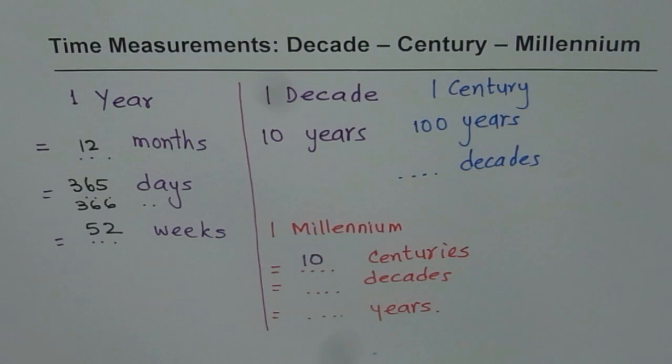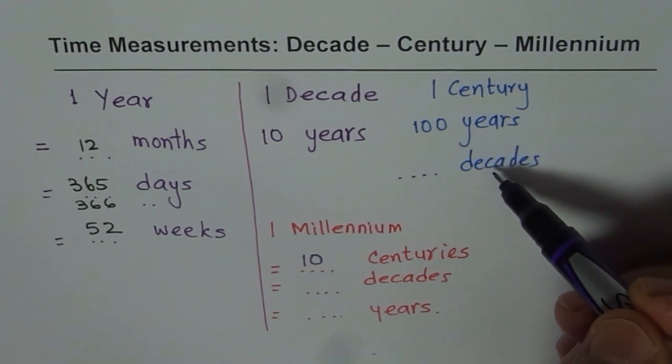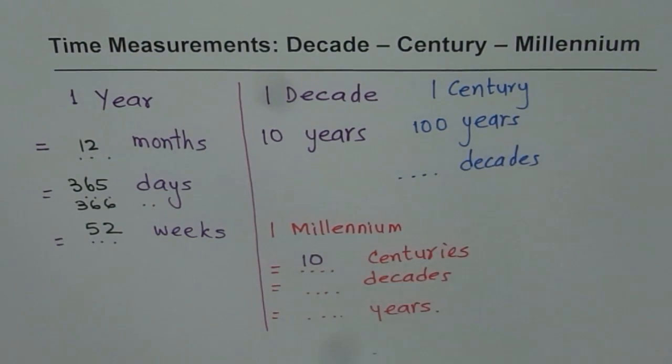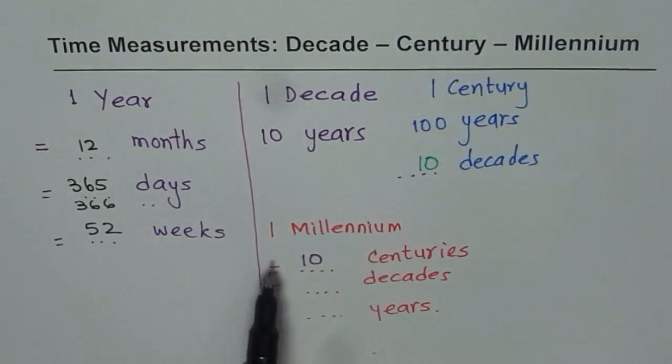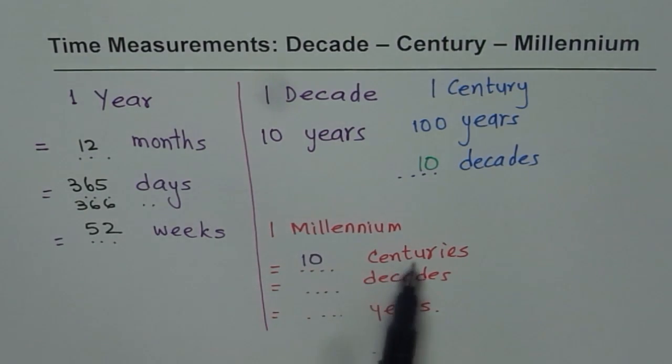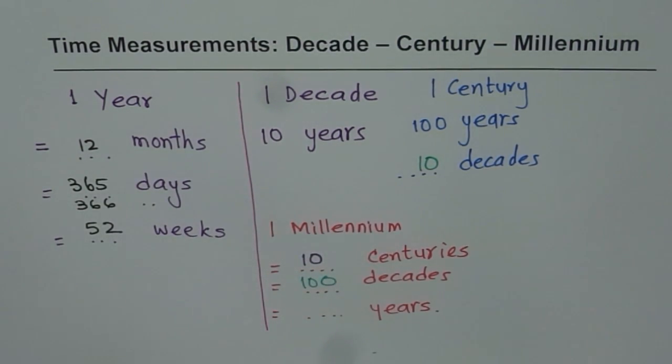Well, we know one century is how many decades? One century is 10 decades. Let me write in a different ink. One century is 10 decades. So if I say that one millennium is 10 centuries, number of decades will be 10 times. So it will be 100 decades. Do you get it?